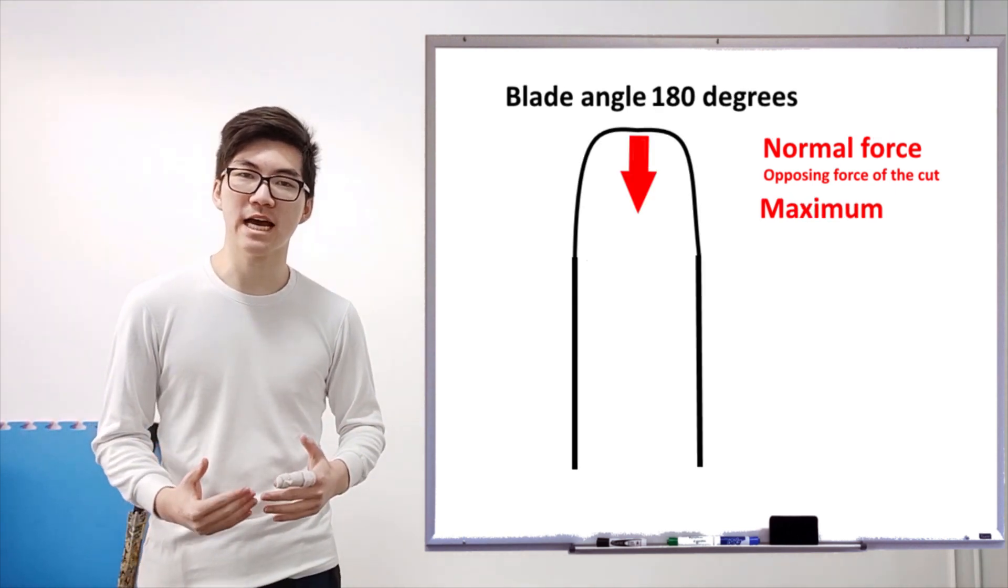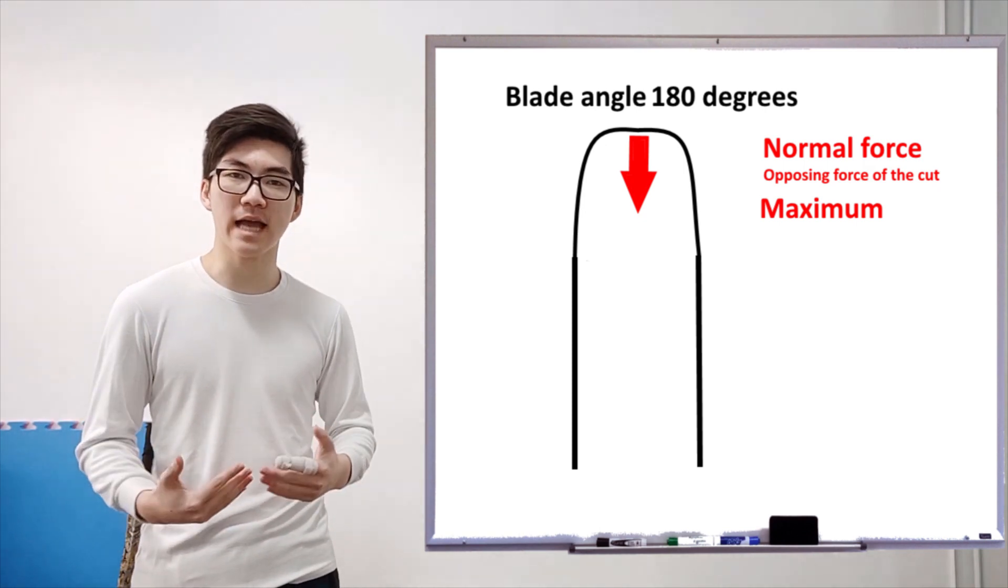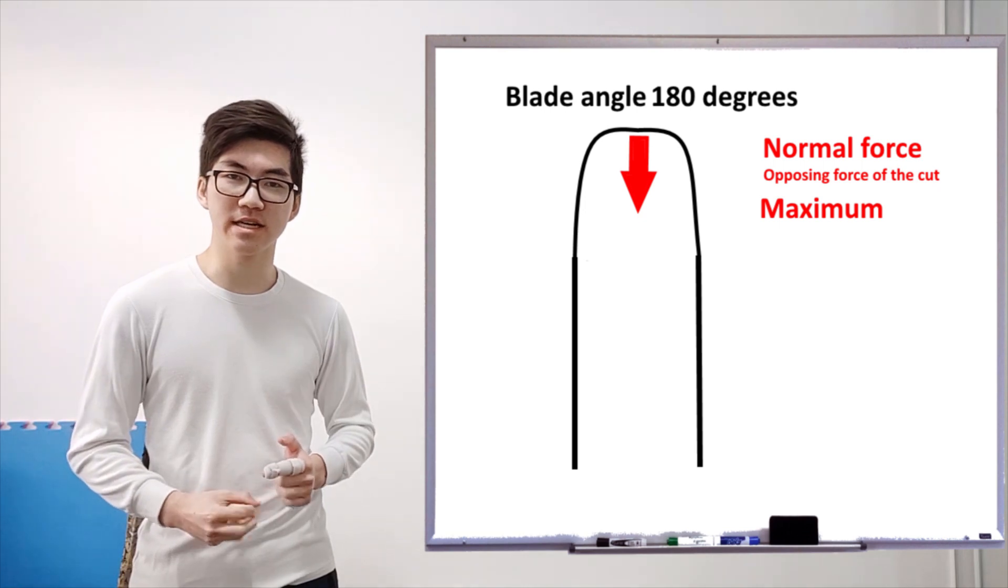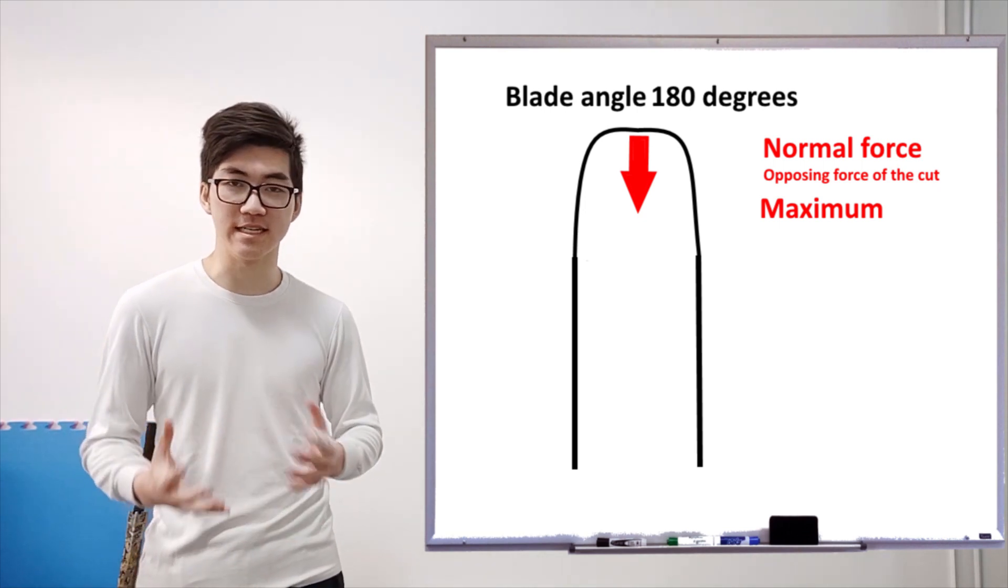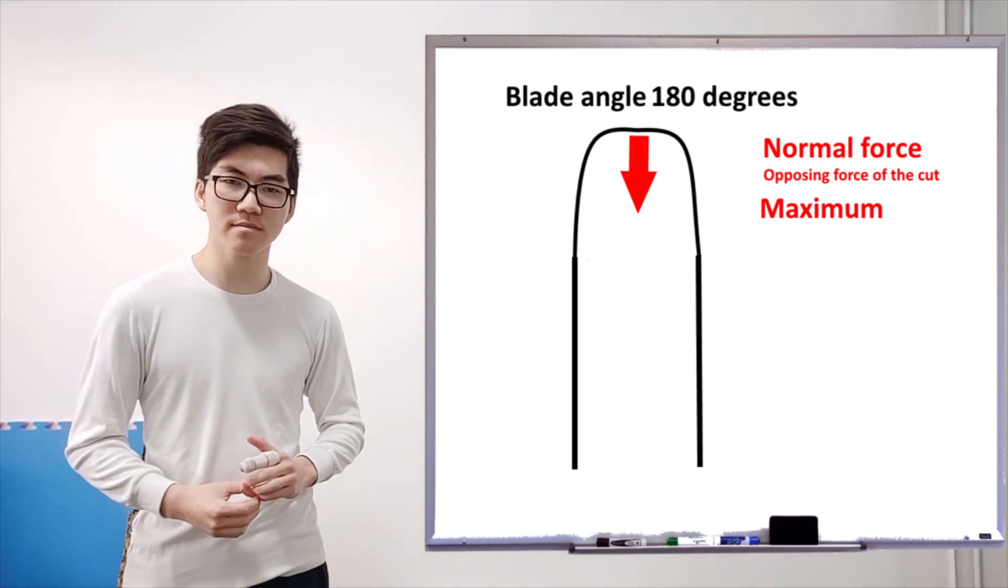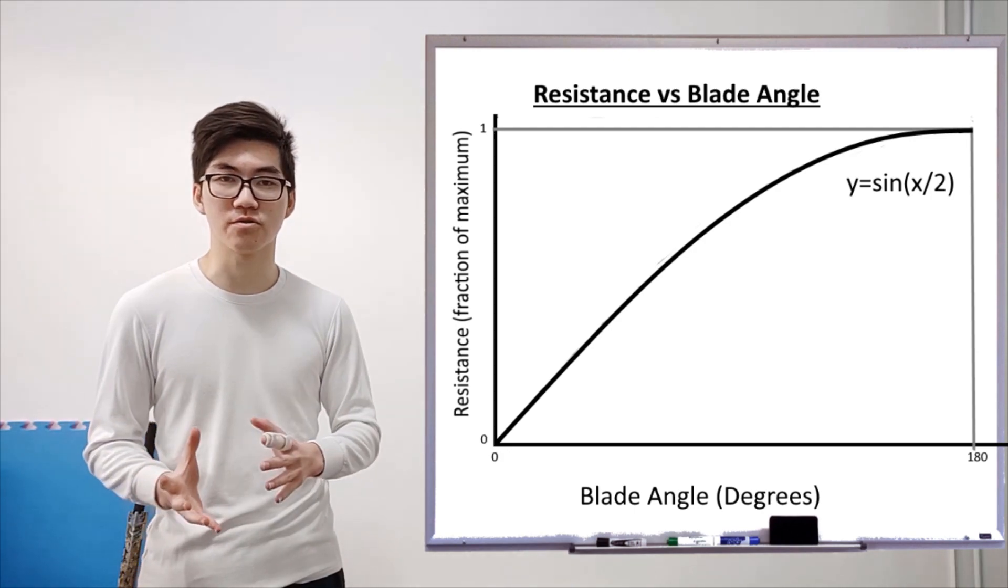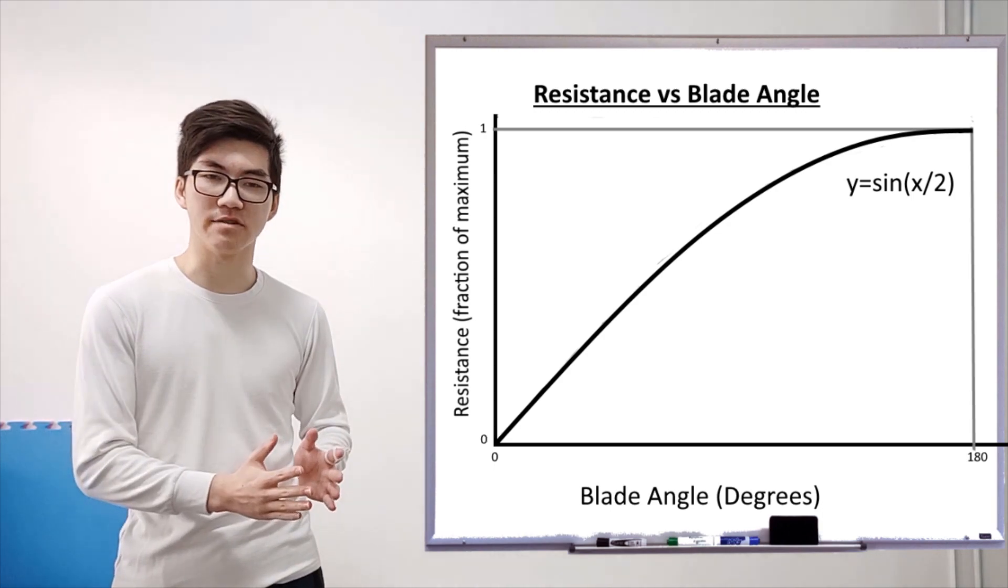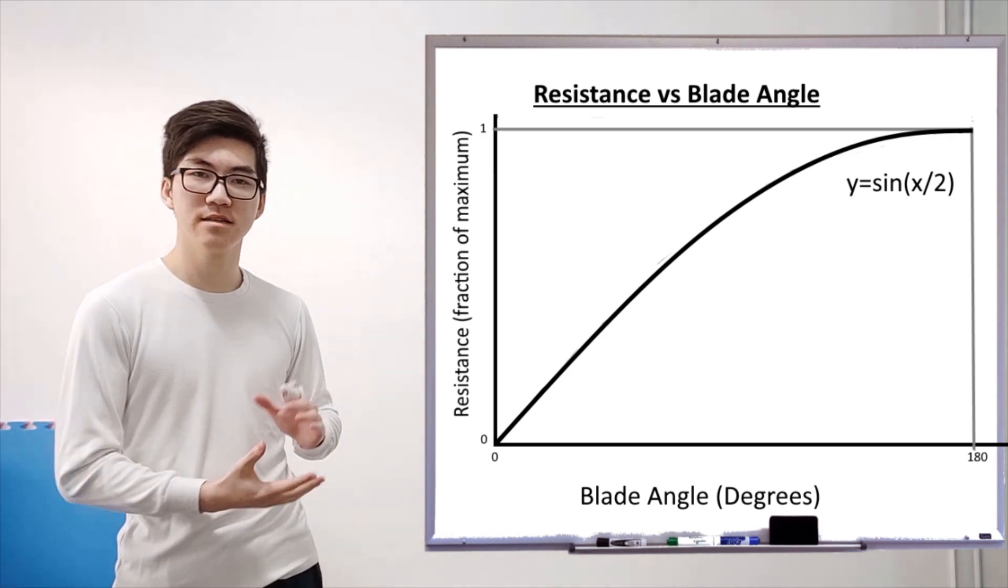Now if you go on the contrary to that, then you have a sword with a cutting angle of 180 degrees. The normal force to that would be at 90 degrees. That would be your maximum resistance because this sword doesn't have an edge. And what we can do is we can map using trigonometry all the different resistances from zero degrees to 180 degrees, and we can create a sine curve.